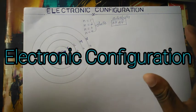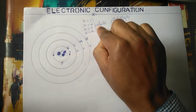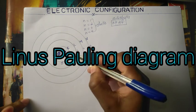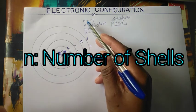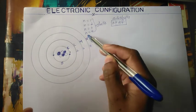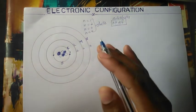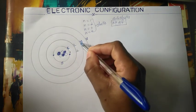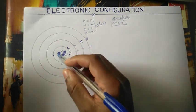In this video we will discuss electronic configuration — what it means from subshell to shell — using the Linus Pauling diagram. We will discuss what these numbers mean, from 1 to 4 and beyond. These numbers represent the number of shells. When n equals 1 it's the first shell, n equals 2 is the second shell, n equals 3 is the third shell, and n equals 4 is the fourth shell. They can also be represented by the letters K, L, M, N. Inside the atom, each shell is made up of subshells.